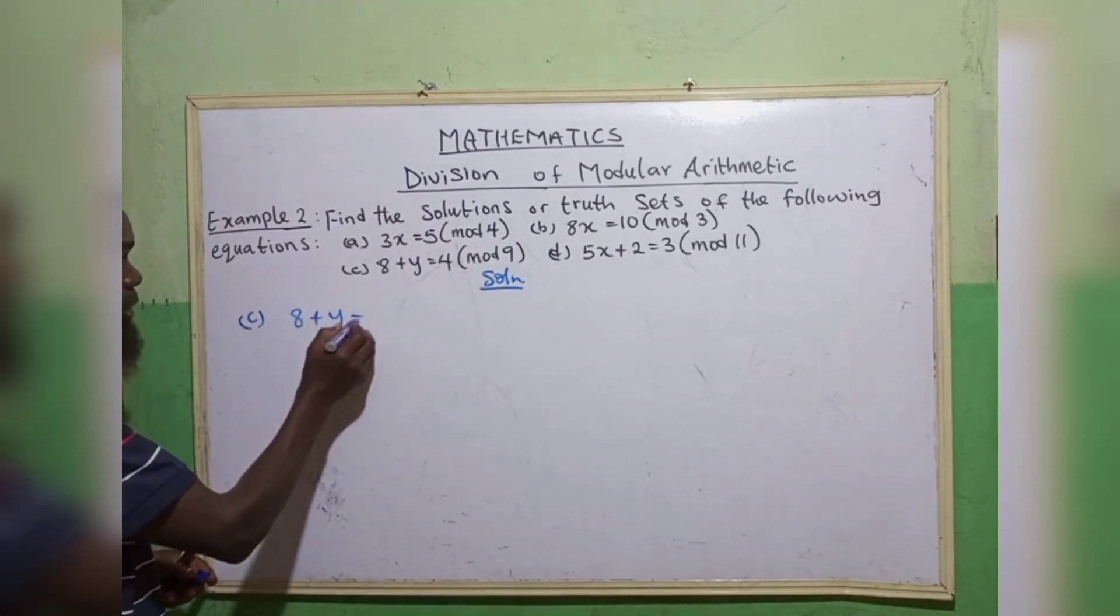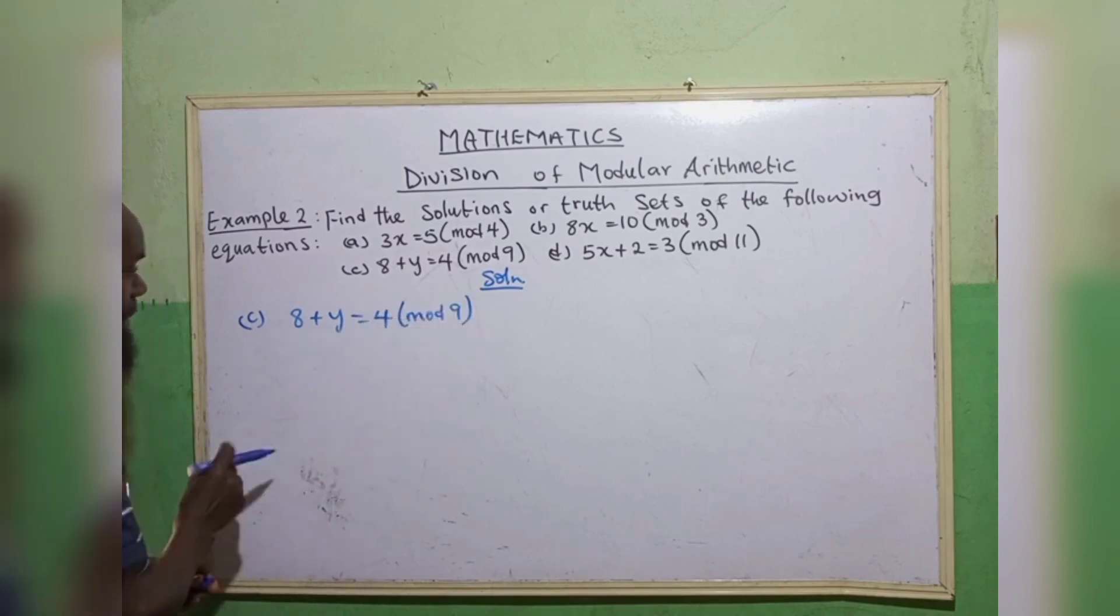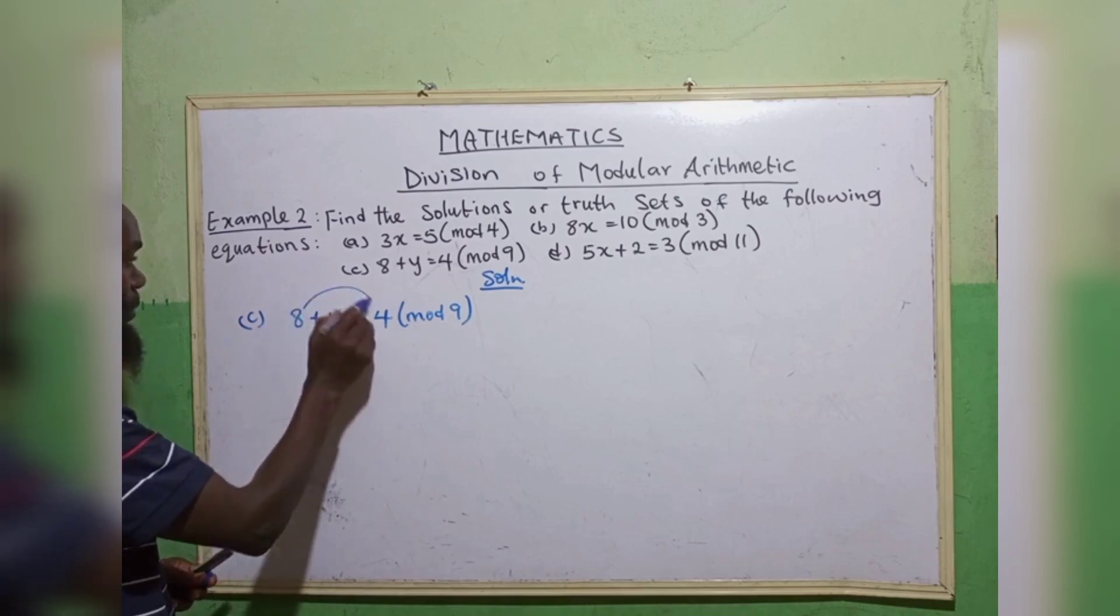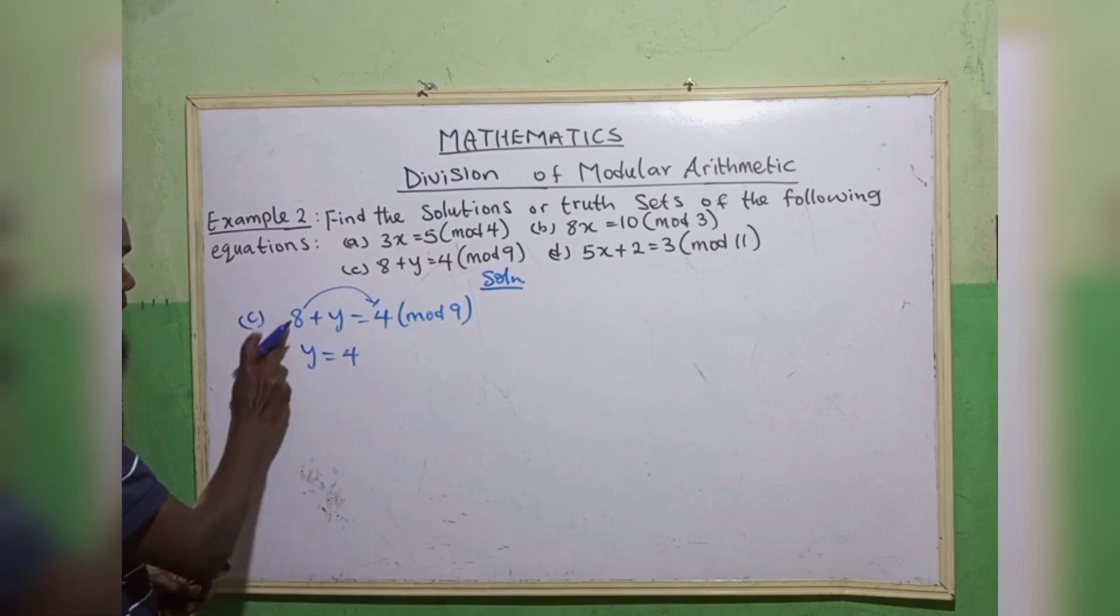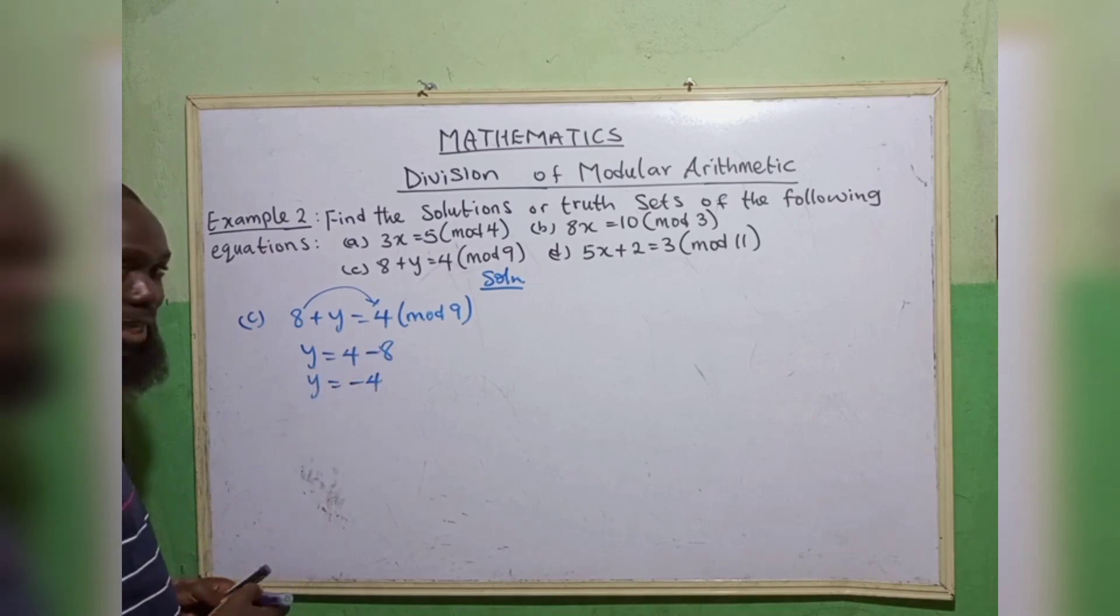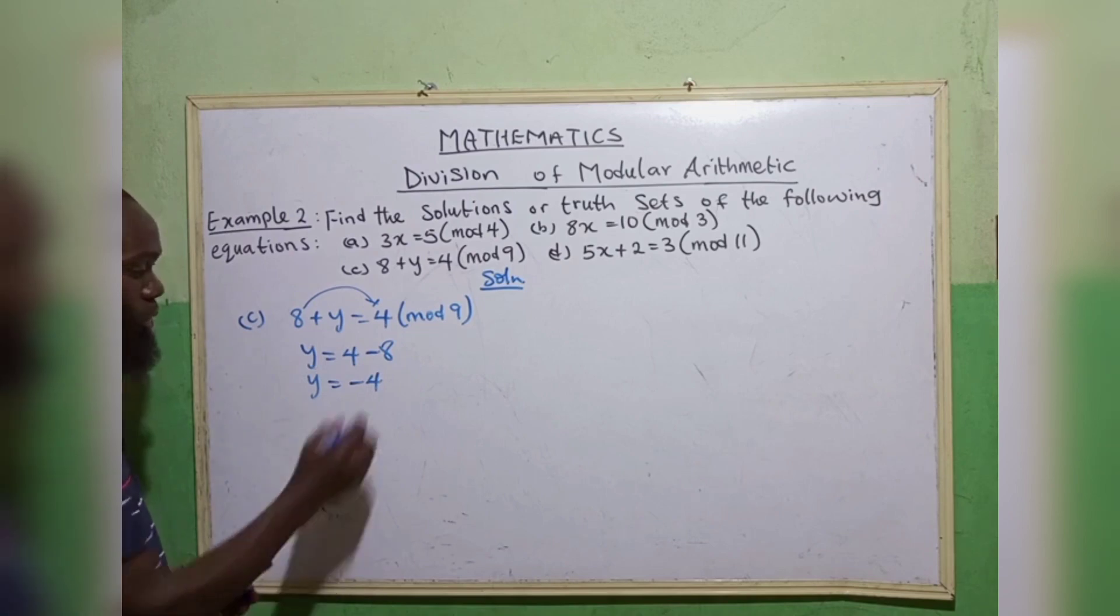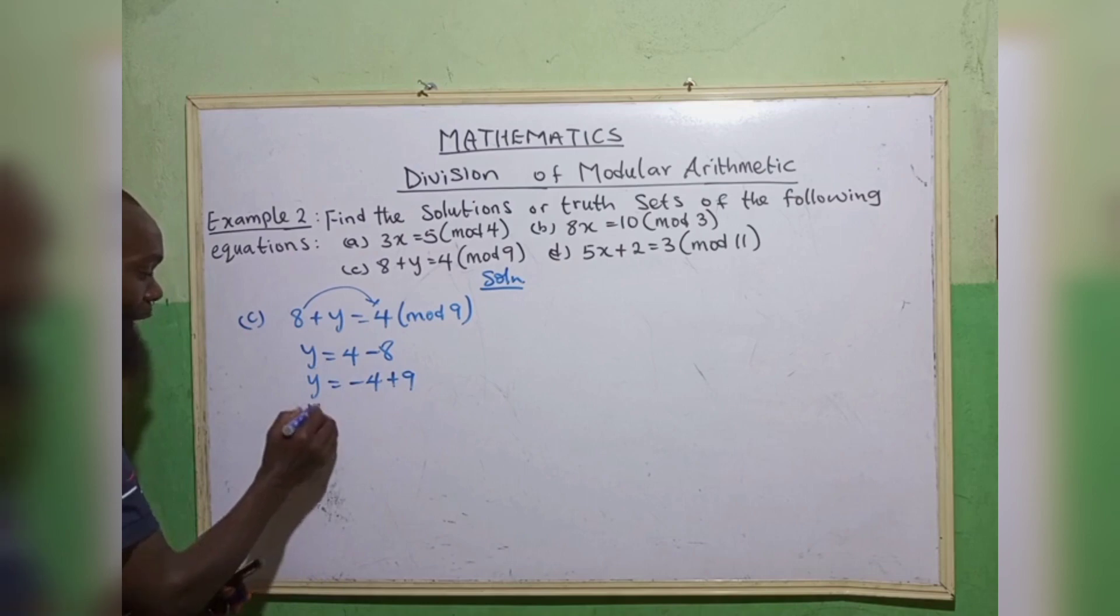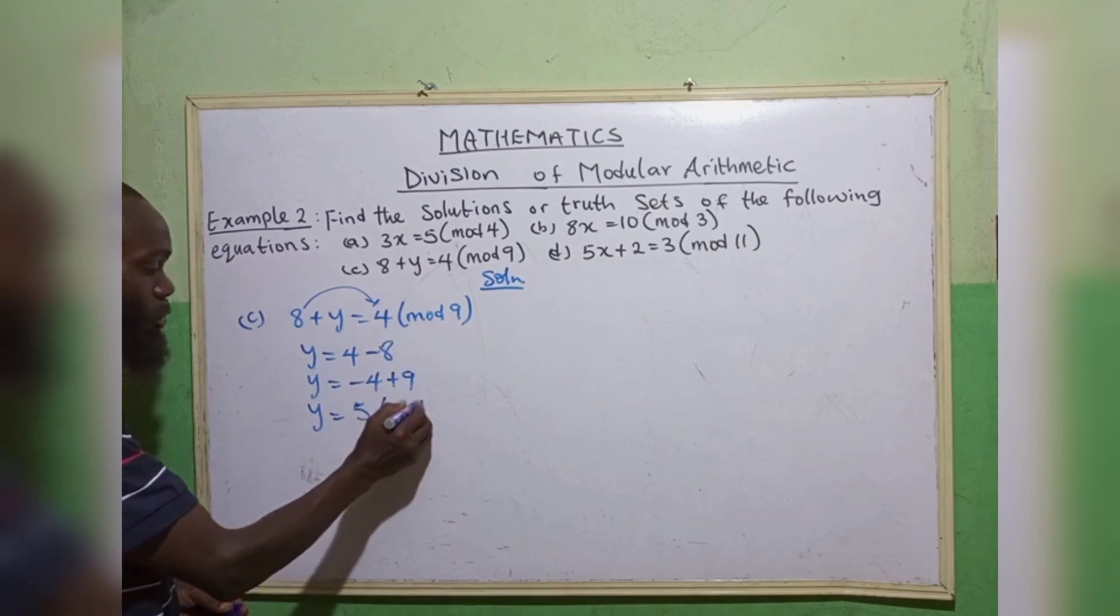8 plus y is equal to 4 in mode 9. The first thing is to collect like terms. y will equal to 4 minus 8, we have minus 4. We know from the rule of modular arithmetic, our answer must not be negative. We add our modulo plus 9. So y equals to minus 4 plus 9, we have 5. So our y equals to 5 in mode 9.